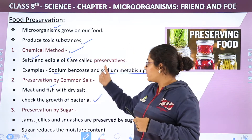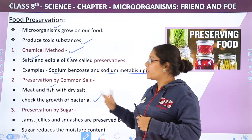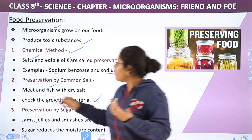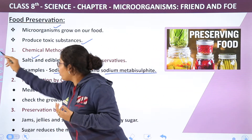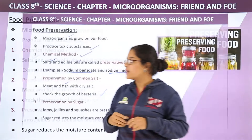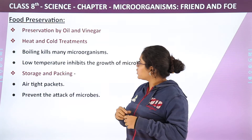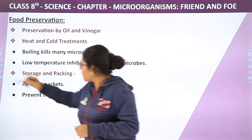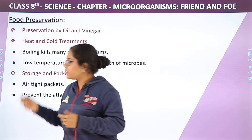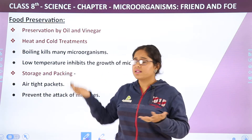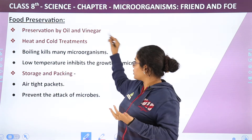So, to summarize the chemical methods: we have common salt, sugar, vinegar, and oil — these can all be used for food preservation.